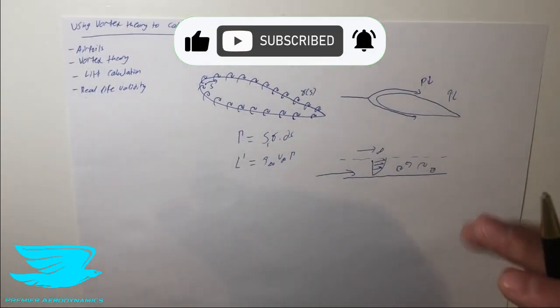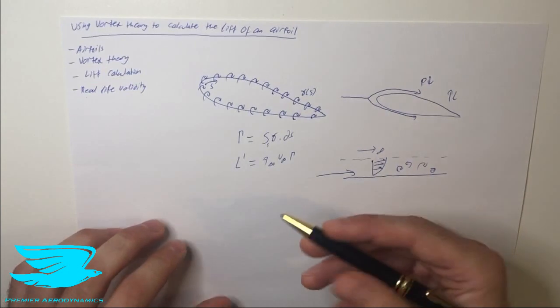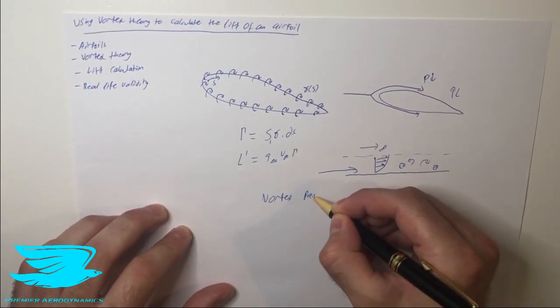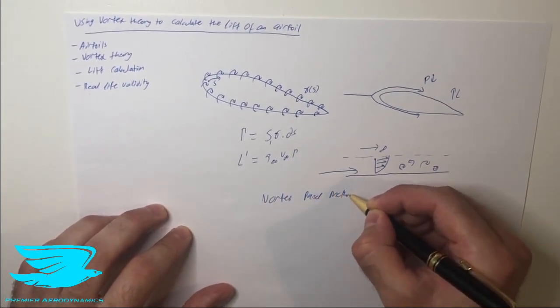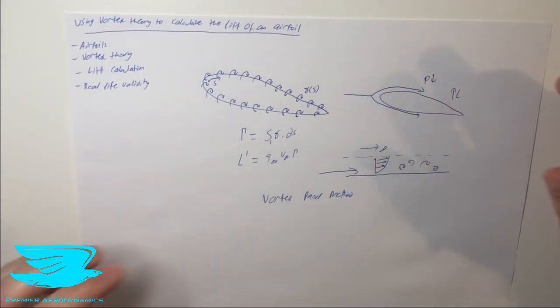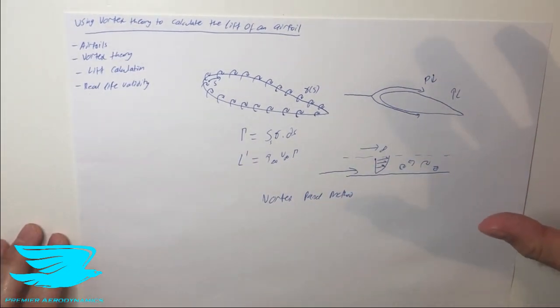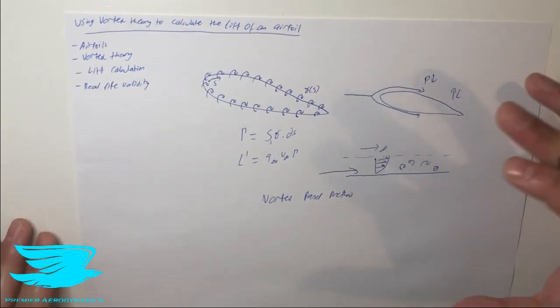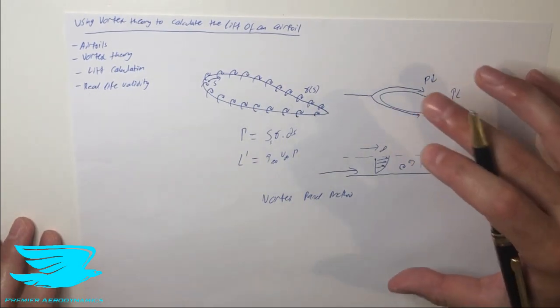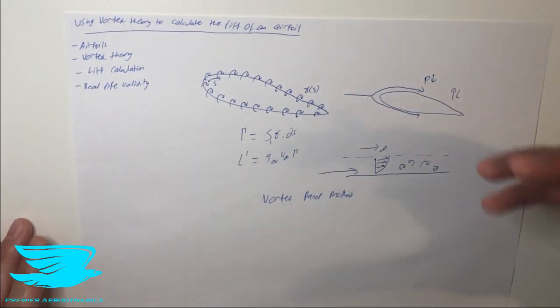And this is actually part of something called a vortex panel method. And this method is one of the earliest forms of computational simulations for aerodynamics and it dated back well before even computers became a thing back in the 60s. And it's an inviscid solver inherently which you can then couple other things to it but inherently it's inviscid.